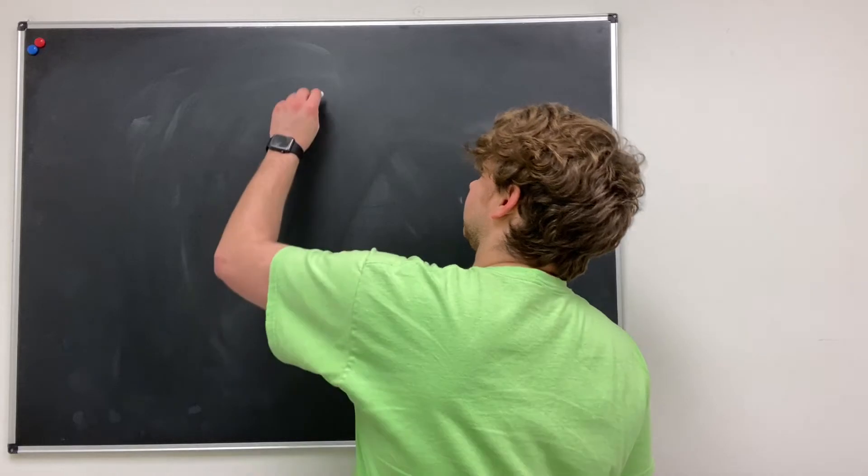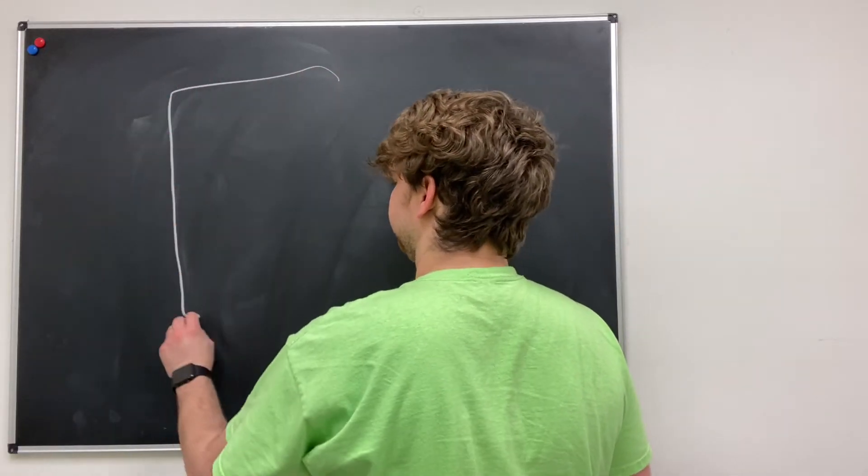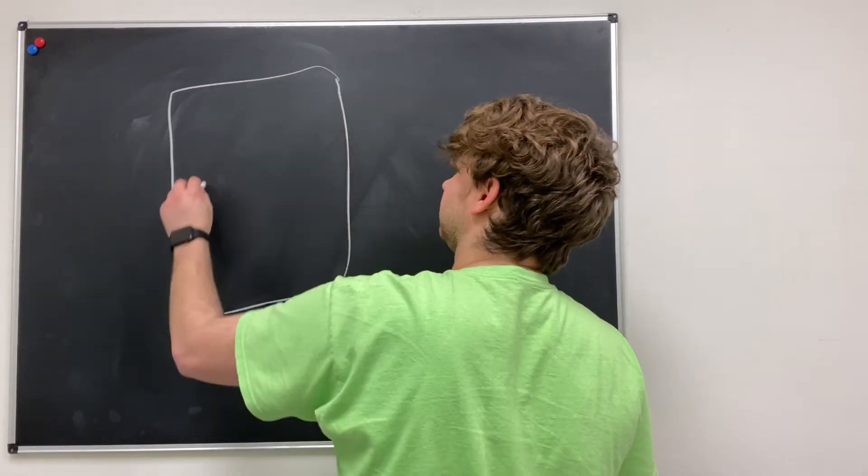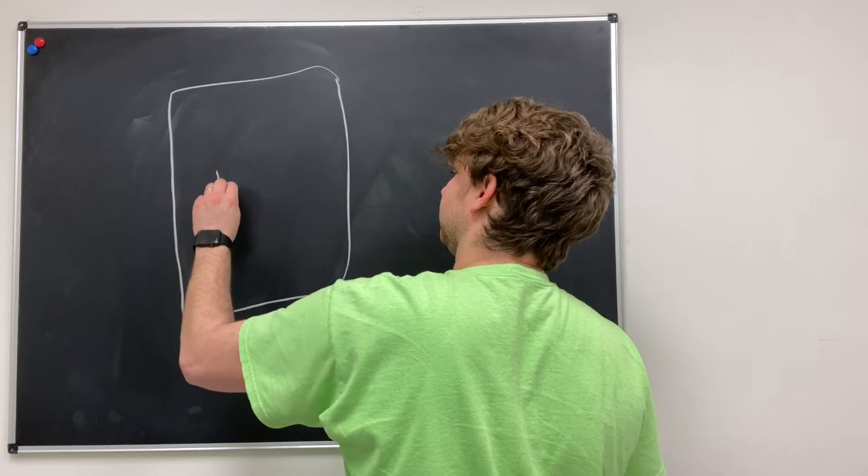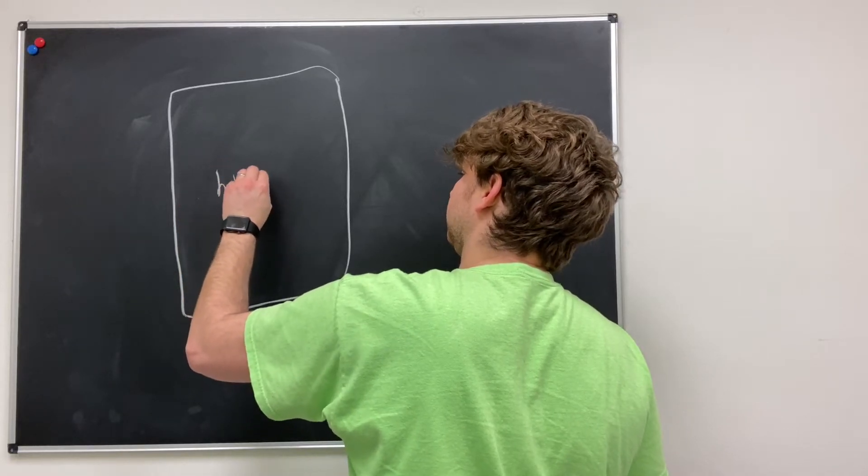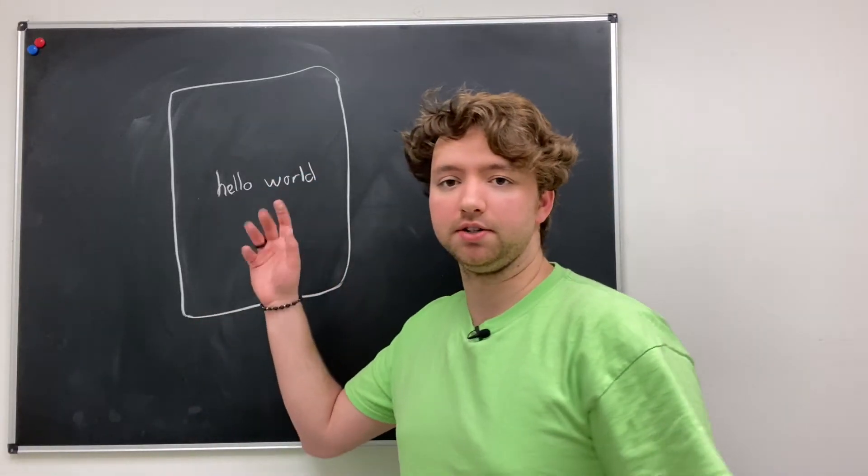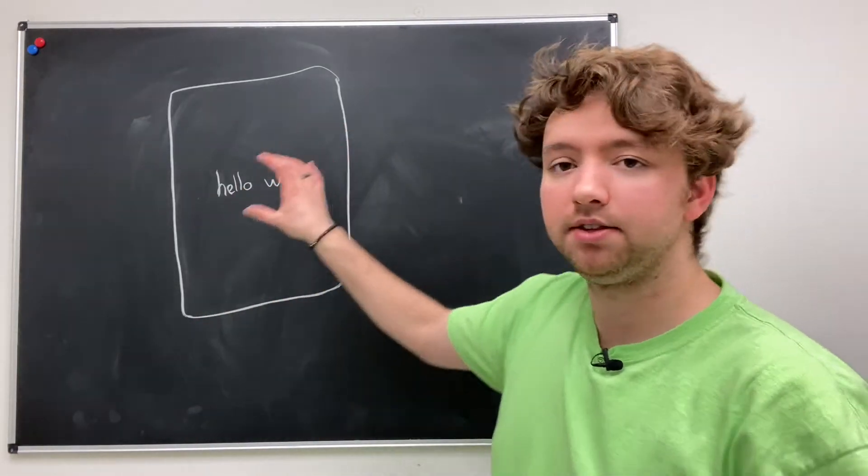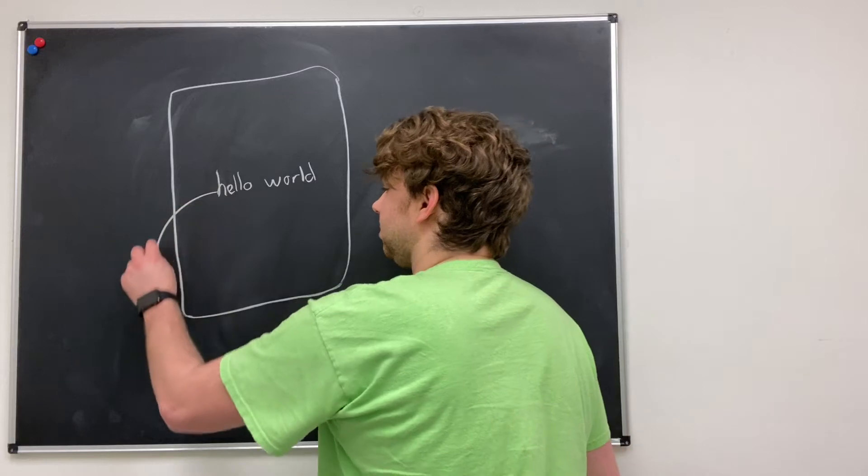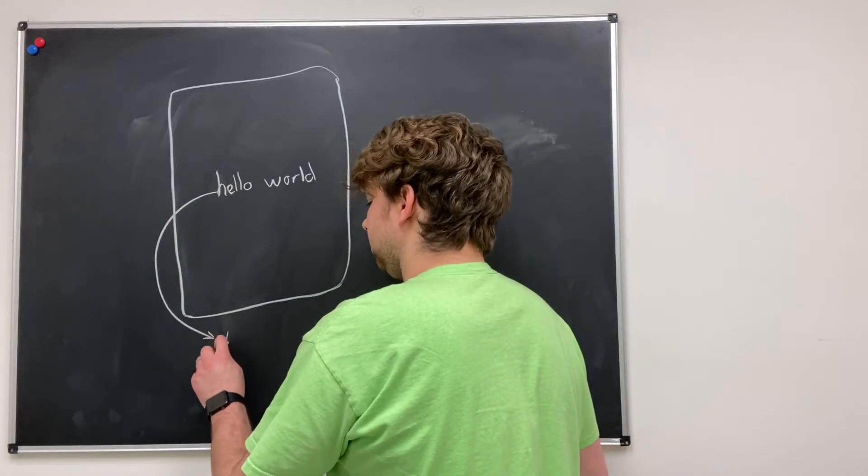So when we're working on an activity, let's just say we're on the main activity, and we have some view, such as a TextView that says hello world. Well this is the appearance, this is the presentation, but behind the scenes, this thing has a ton of available attributes.